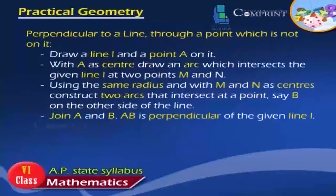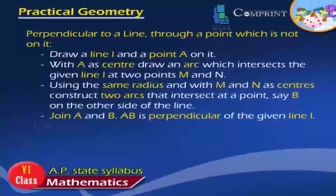Perpendicular to a line through a point which is not on it: Draw a line L and a point A on it. With A as center, draw an arc which intersects the given line L at two points M and N. Using the same radius and with M and N as centers, construct two arcs that intersect at a point, say B on the other side of the line. Join A and B. AB is perpendicular of the given line L.